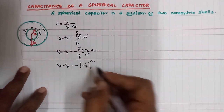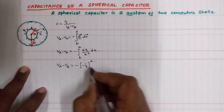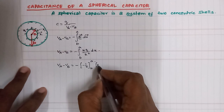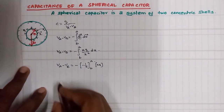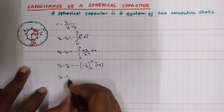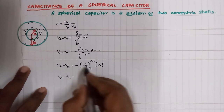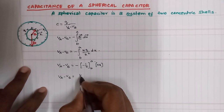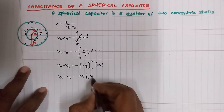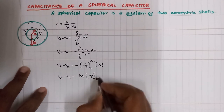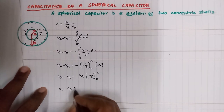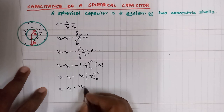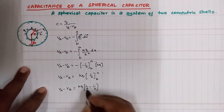With limit b to a, minus into minus gives plus kq. So Va minus Vb equals plus kq into 1 by x, evaluated with limits. If you substitute this limit, Va minus Vb is equal to kq times (1/a minus 1/b).